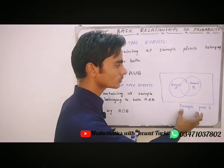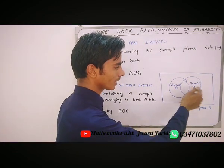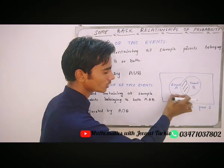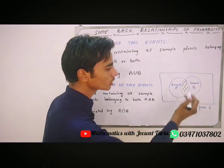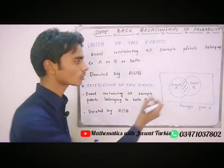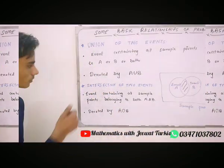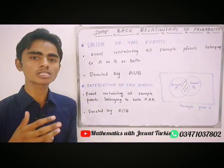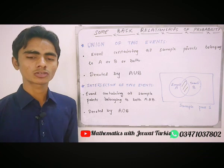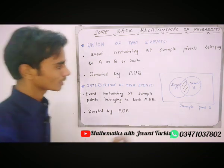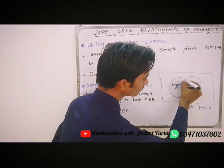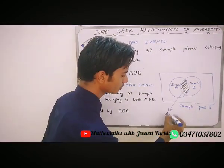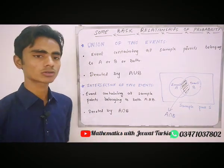Let's suppose this rectangle is the sample space, this is event A and this is event B. By definition, the union event contains all sample points belonging to A, or belonging to B, or belonging to both. The overlapping portion shows the experimental outcomes which belong to event A as well as event B — that is A intersection B.